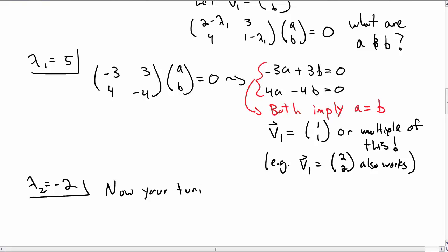There's another eigenvector for λ2 = -2. And this is your turn. So now take a moment using the same technique to find the eigenvector for this eigenvalue.